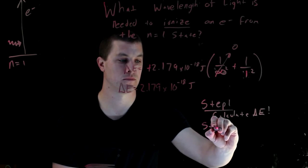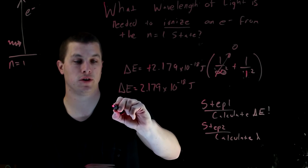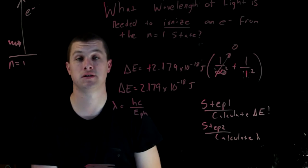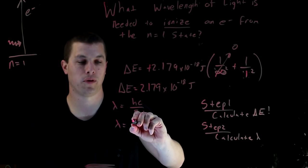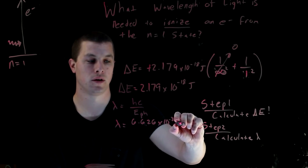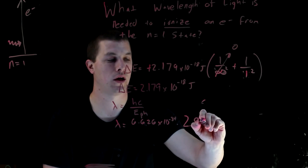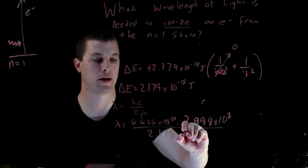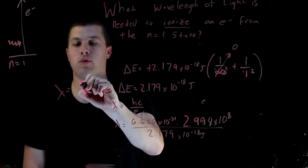Step two: calculate lambda. Lambda equals hc over the energy of our photon. Notice the change in energy is positive because it's an absorption process — we're giving energy to the electron. Plugging in Planck's constant 6.626 times 10 to the minus 34, the speed of light 2.998 times 10 to the 8th, divided by 2.179 times 10 to the minus 18 joules, our lambda comes out to 91 nanometers.